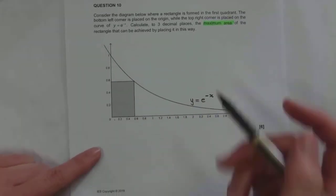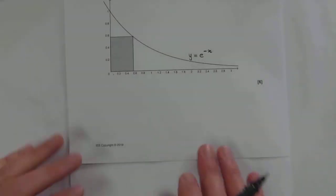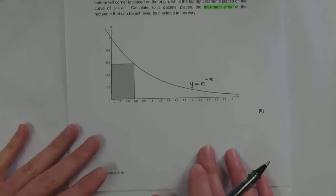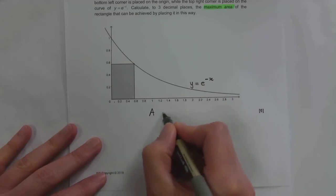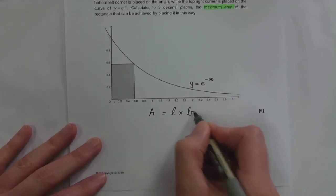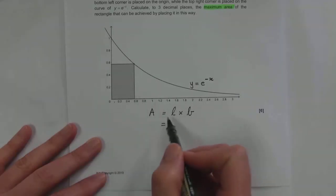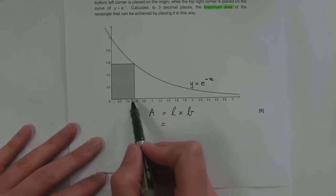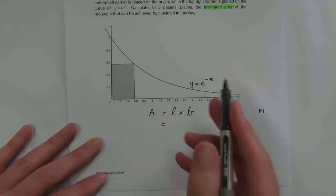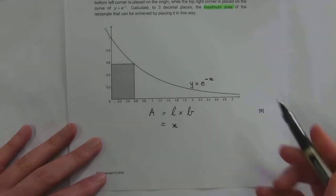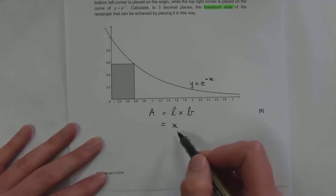We want to maximize the area, and as I discussed in the previous video on optimization, whatever we're trying to maximize, I need a formula for it. The area of a rectangle is length times breadth. The length is just my x value as the corner moves along. The breadth is the y-coordinate, which is e^(−x). So the area is x times e^(−x), and that's what I'm trying to maximize.